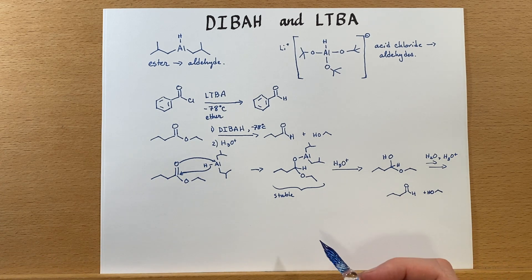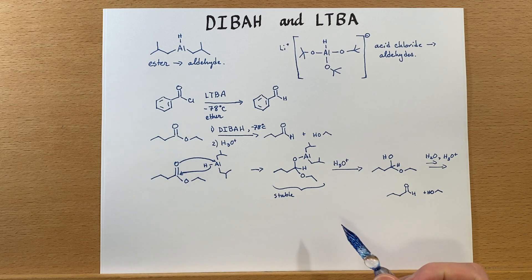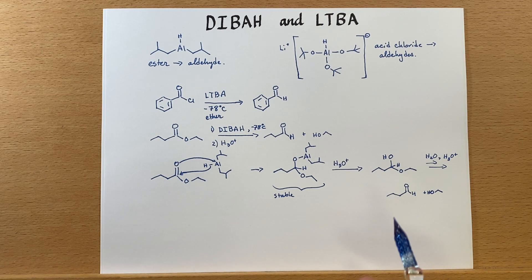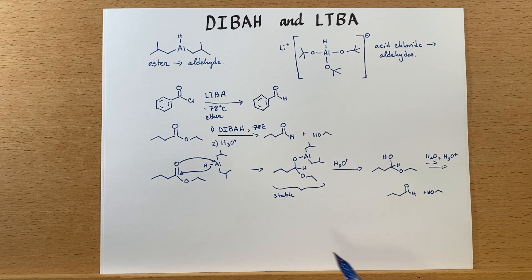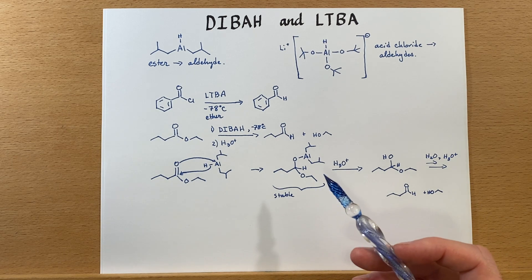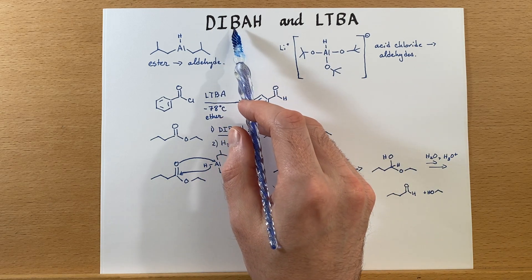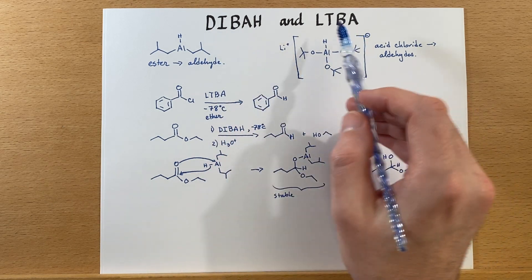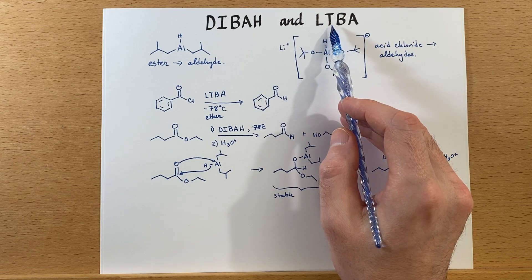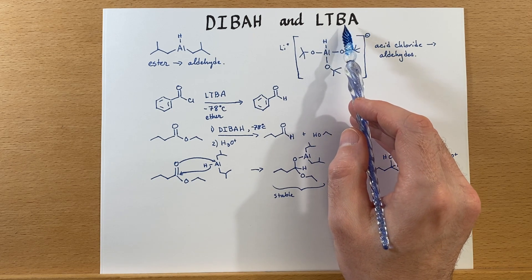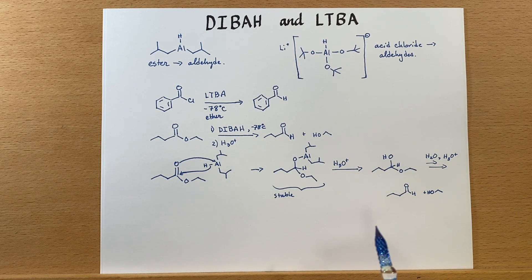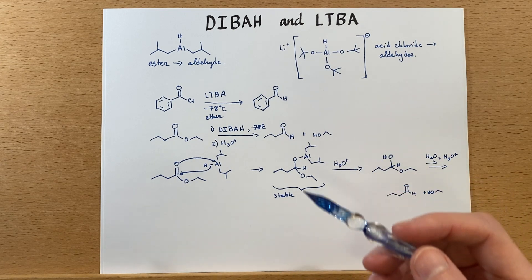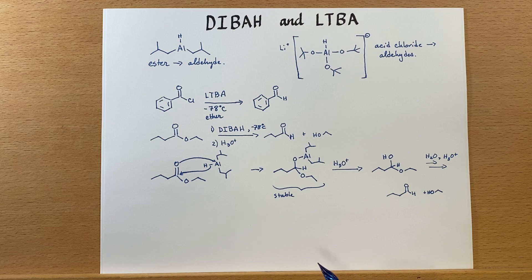We've now explored the reactivity of a couple of new reducing agents — ones with lower reactivity that give us greater control. Those are diisobutylaluminum hydride (DIBAH) and lithium tri-tert-butoxide aluminum hydride (LTBA). These reagents are useful for making aldehydes from more reactive acid chlorides and esters.